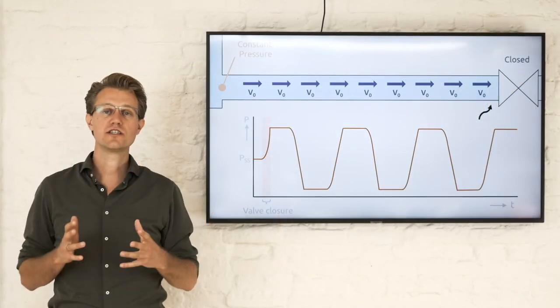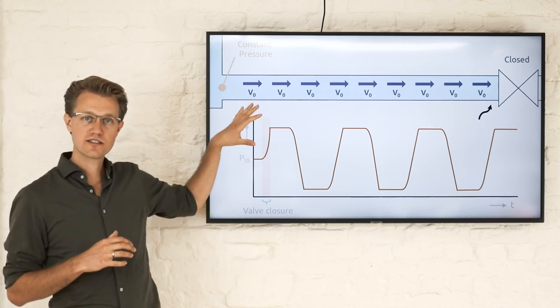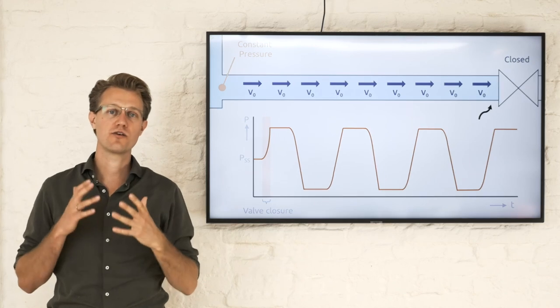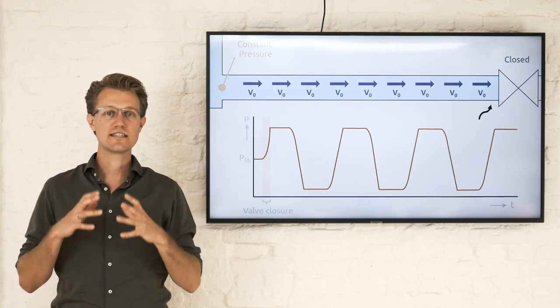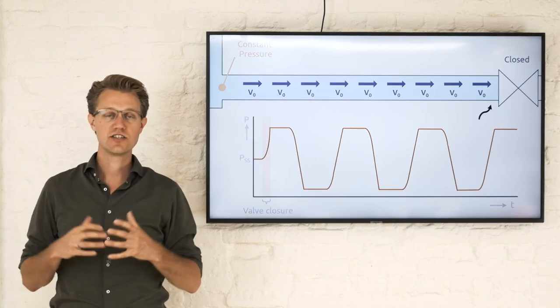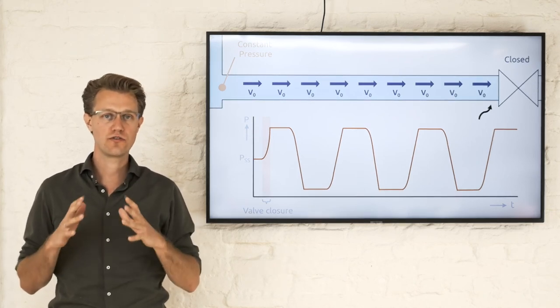We've now seen that if a valve closes, the momentum of the liquid upstream causes a pressure increase at the location of the valve. It is this pressure increase which then causes a wave into the system. This pressure wave causes the flow to stop.